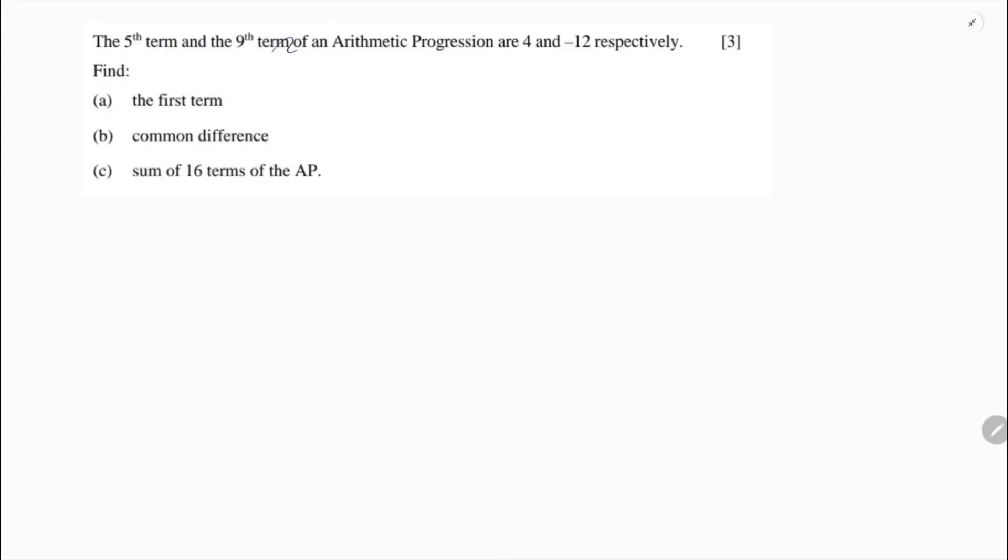The 5th and 9th term of an arithmetic progression are 4 and minus 12 respectively. We need to find the first term, common difference, and sum of 16 terms of the AP.